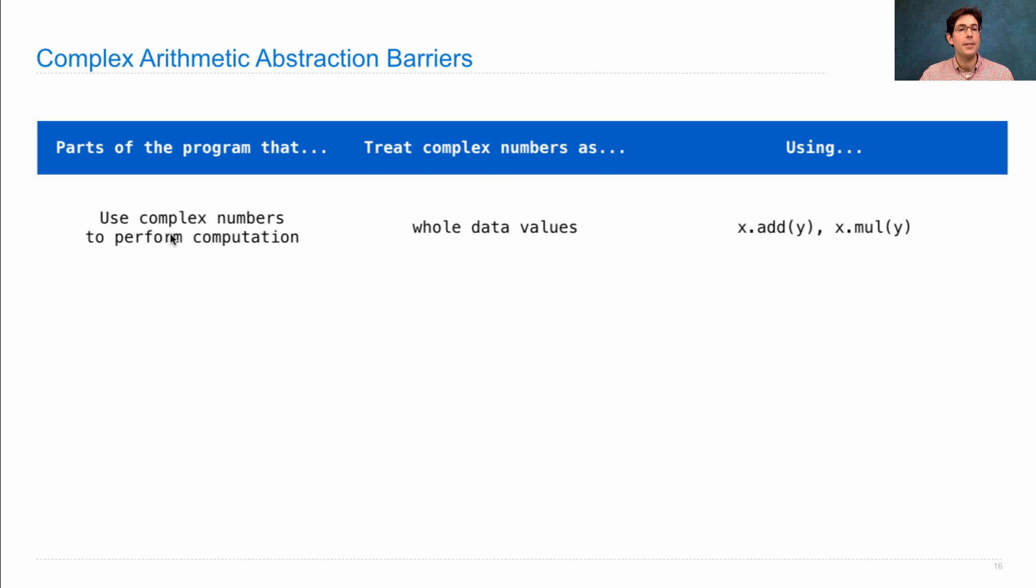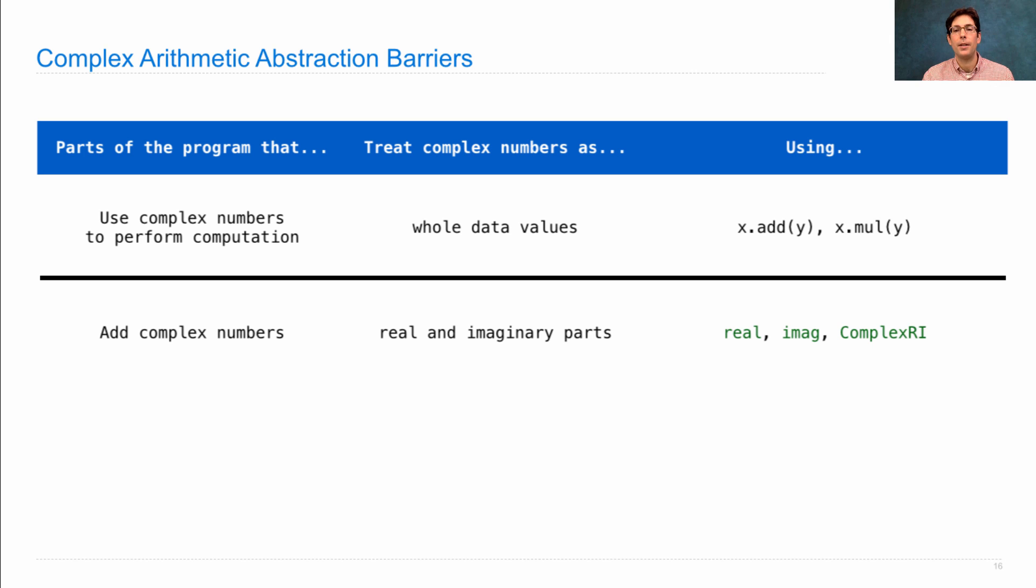So these don't care about which representation we're using. But the part of the program that actually implements addition is going to treat complex numbers as real and imaginary components, using real and imag attributes and the ComplexRI constructor.